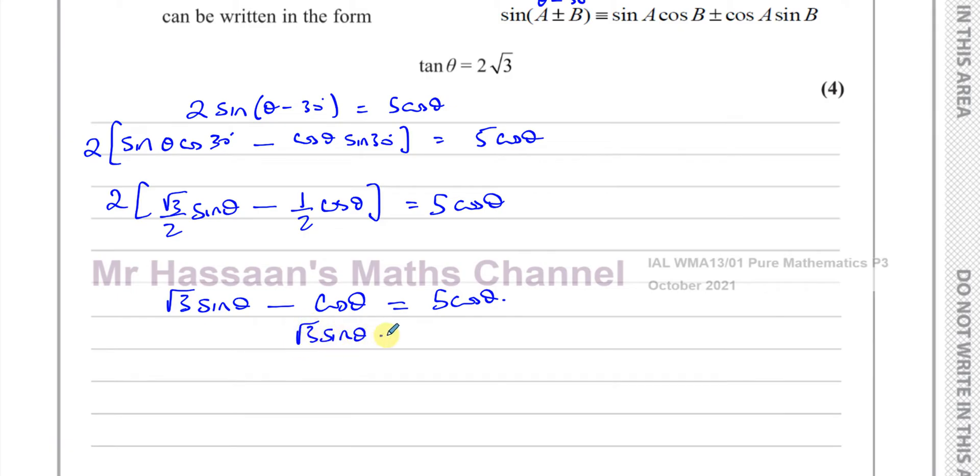And we can add cosθ to both sides, so √3·sinθ = 6cosθ. And now I know that tanθ, another identity, tanθ is sinθ divided by cosθ. So if I divide both sides by cosθ, I'll be left with √3·tanθ equals 6.